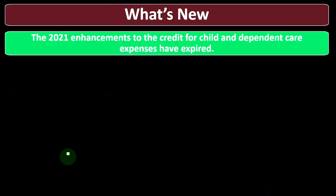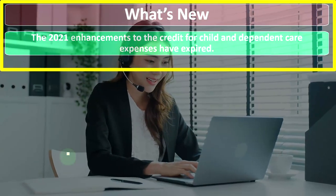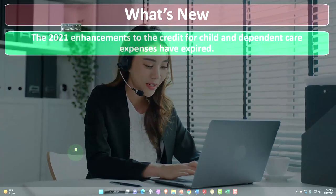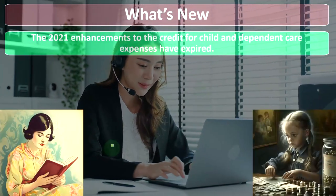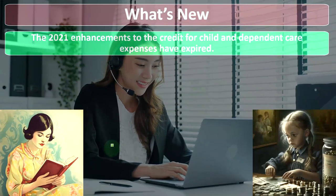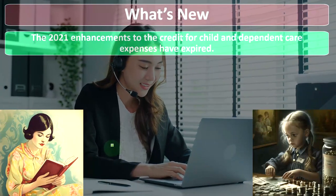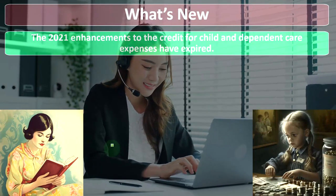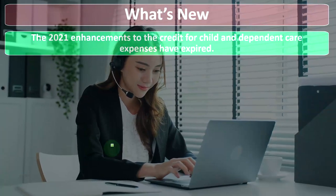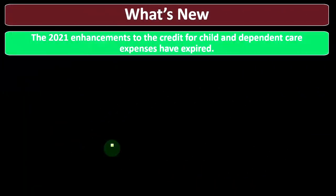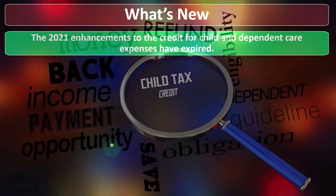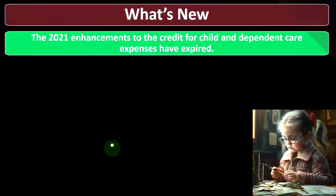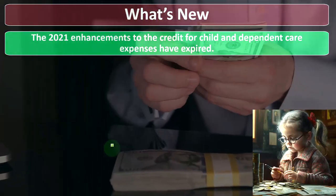We want to go into what's new first, and then we'll get into the nitty-gritty with the expenses. First, I want to point out that the child and dependent care expenses credit is not the same as the child tax credit. The child tax credit is fairly straightforward — you have a qualifying child. The child and dependent care expenses credit is more complicated, because it's based on expenses related to the care of the child. So they're two different credits.